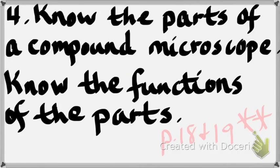If you're on scanning, which adjustments can you use to focus — coarse, fine, or both? Both. If you're on 10X low power, which adjustments can you use? Both. If you're on high power 40X, which adjustments can you use? Only fine. Which of those three objectives has the largest field of view? Scanning — we measured it with a ruler; it came out to about five millimeters.